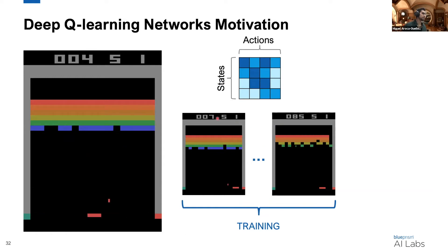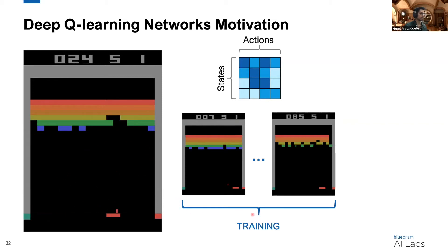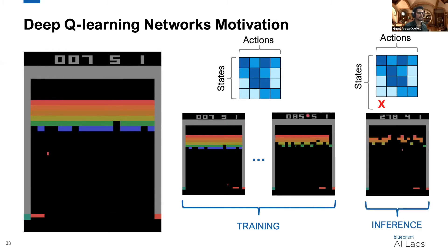Another motivation for DQNs can be seen in this example. On the left, we have an agent playing the Atari game Breakout, collecting training data and filling in a TQL table. However, what happens during inference if we see a state that we didn't see during training? If it's not in our Q table, what do we do — randomly pick an action, or try to find a similar state? This is one of the big downsides of TQL, which DQN can solve. With DQN, we can still apply our Q network on these unseen states, and if it is well-trained, it should generalize quite well due to similarity to previously seen states.